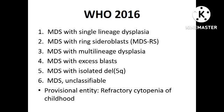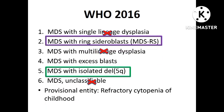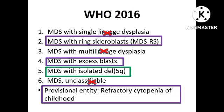Now in WHO 2022, there is no entity called single lineage dysplasia, and multilineage dysplasia has also been eliminated. There is no MDS unclassifiable category. MDS with isolated deletion 5Q remains the same, whereas MDS with ring sideroblasts, MDS with excess blasts, and the provisional category refractory cytopenia of childhood have all been modified.